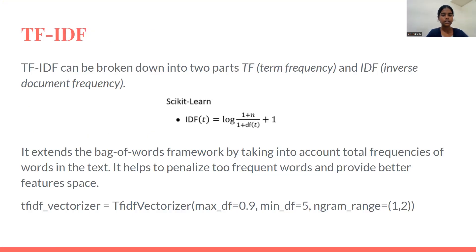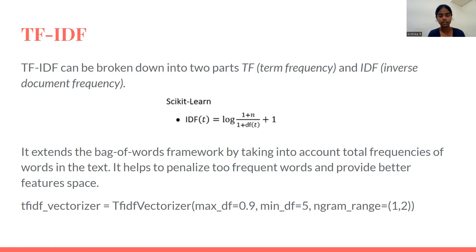The syntax shown here is the scikit-learn TF-IDF Vectorizer function to calculate the TF-IDF value. The 0.9 parameter tells us that words occurring more than 90% of the time will be removed from the whole document.